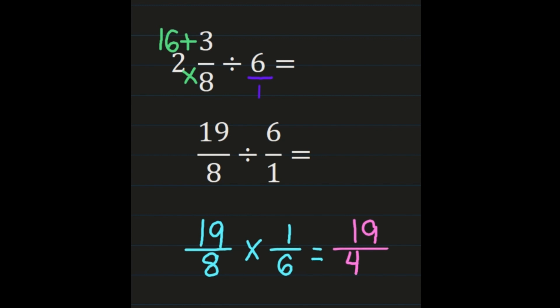19 and 48 don't share any common factors, so 19 forty-eighths does not need to be simplified. It is your final answer.